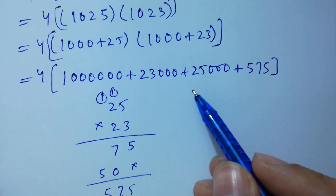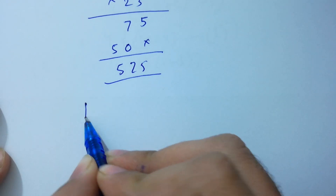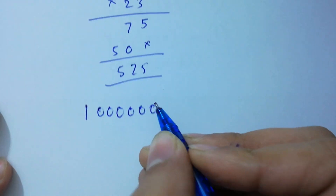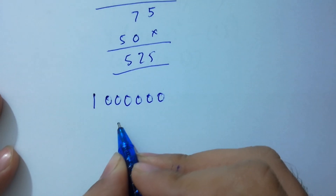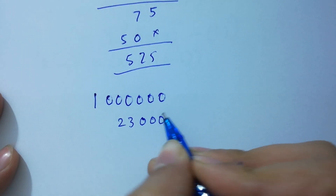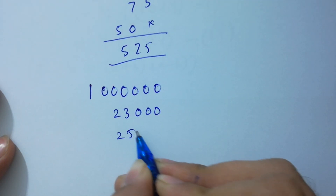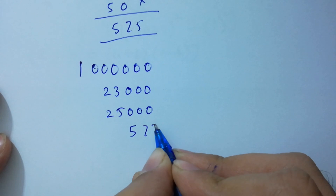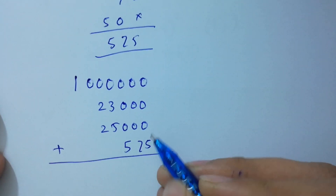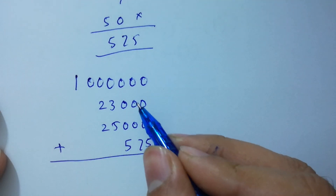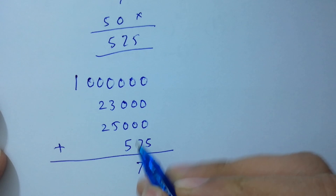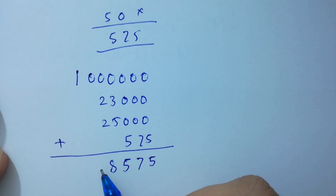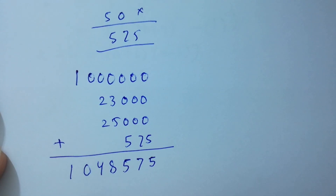In the next step, I am going to add: 1,000,000 plus 23,000 plus 25,000 plus 575. Adding column by column: 0 plus 0 plus 0 plus 5 gives 5; 0 plus 0 plus 0 plus 7 gives 7; 0 plus 0 plus 5 gives 5; 3 plus 5 gives 8; 2 plus 2 gives 4; 0 as it is; 1 as it is. So the result is 1,048,575.